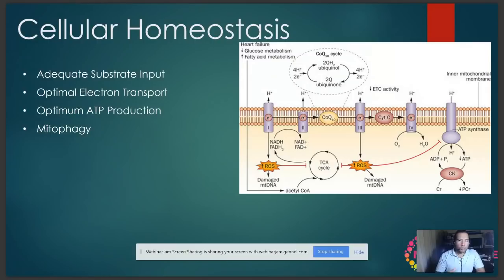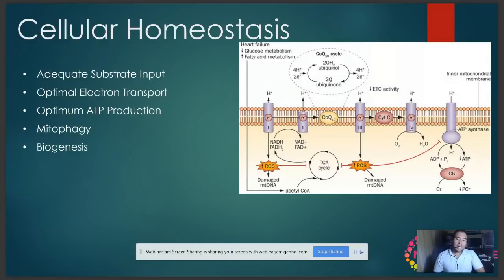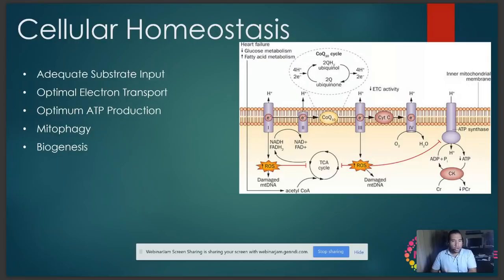Mitophagy is the cellular process of getting rid of damaged mitochondria, damaged cellular structures, and damaged DNA. Just the process of being a cell and metabolizing nutrients causes damage — like machines, they wear out. Once damaged, they're no good to the system and can cause cancer or cellular degeneration. Each cell can have anywhere from 3-4 to 2,400 mitochondria. Depending on the type of cell and energy demand, it can increase the number of mitochondria it has.